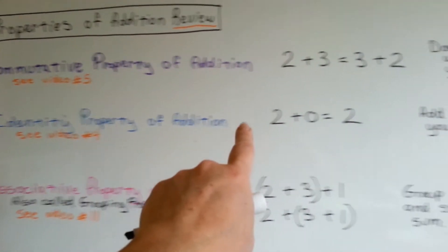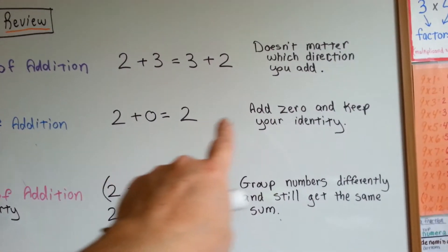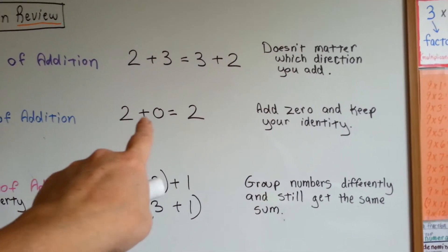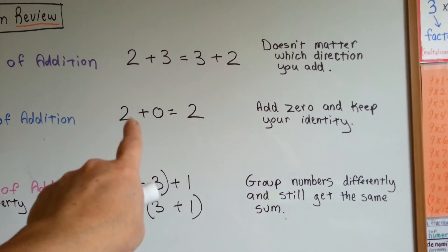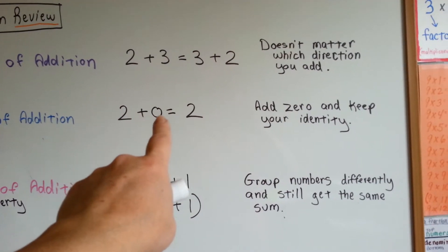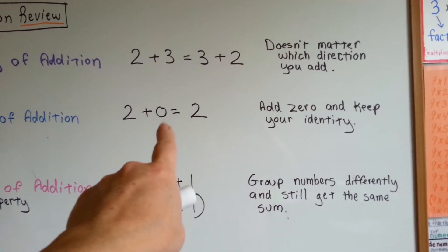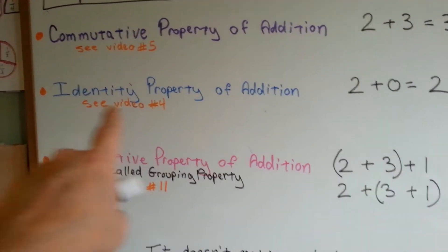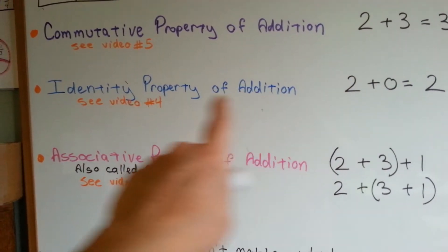Identity property of addition says that you can add 0 and keep your identity. Any number plus 0 is still going to be that number. 2 plus 0 is still going to be 2. 0 doesn't change its identity. See video 4 to get the full video.